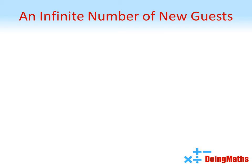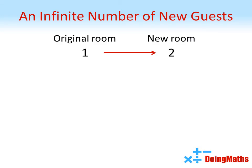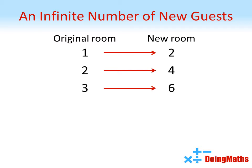This time the manager asks you in room 1 to move to room 2, the guest from room 2 moves to room 4, and so on — each guest moving to a room that is double their current number. This leaves all of the odd-numbered rooms free. As there are an infinite number of odds, our infinite number of new guests can move into these.